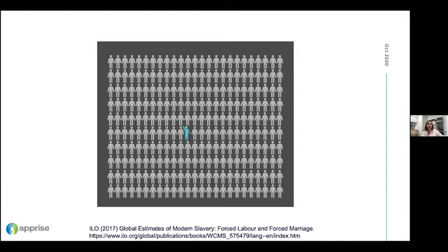To better understand the problems in the field, we started in early 2017 by visiting a broad cross-section of stakeholders in Thailand — all with mandates in forced labour and victim identification. This included the police, the Department of Special Investigations from the Ministry of Justice, and NGOs and intergovernmental organizations with mandates in labour exploitation and migration.